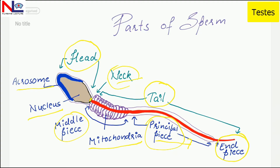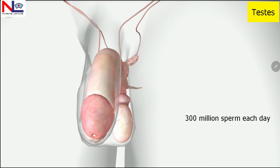Once ejaculated, sperm do not survive more than 48 hours within the female reproductive tract. Around 300 million sperms complete the process of spermatogenesis every day.